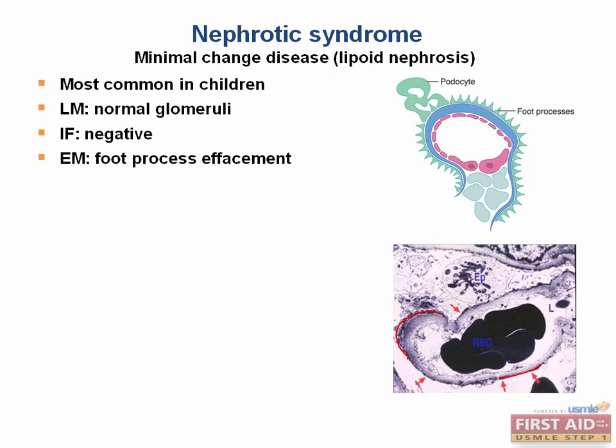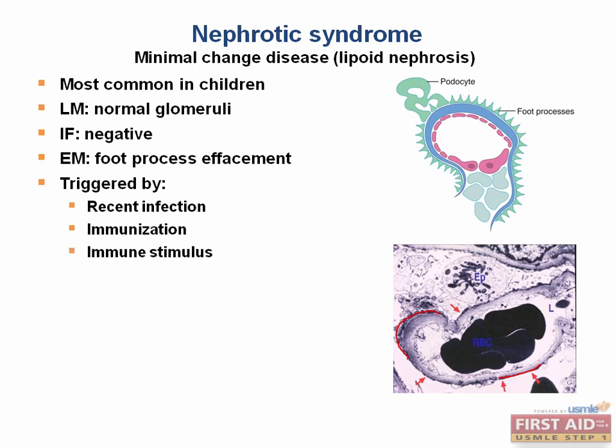This will decrease the kidney's ability to retain albumin, and protein will be directly lost into the urine, contributing to the patient's symptoms. This disease often follows an infection, immunization, or some immune stimulus, or can be associated with Hodgkin's lymphoma. Typically, there's an excellent response to steroids.